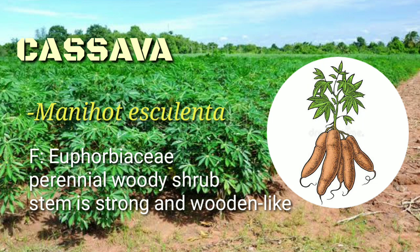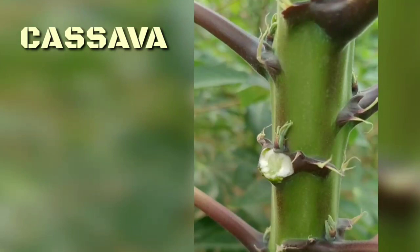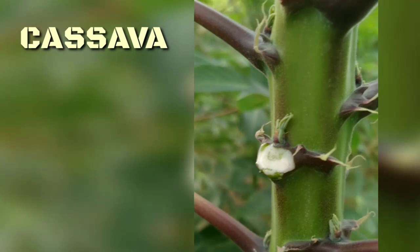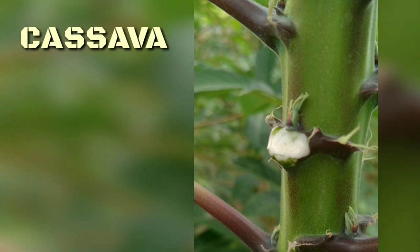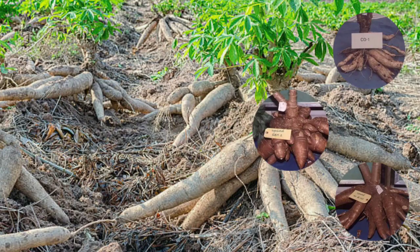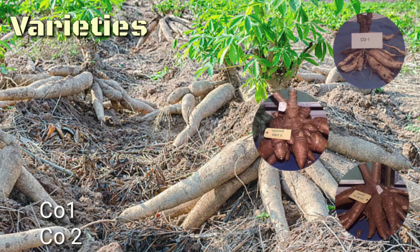Tapioca has the scientific name Manihot esculenta and it belongs to the family Euphorbiaceae. The plant is woody with an erect stem and spirally arranged leaves. The plant produces petal-less flowers. The cassava plant is common in the tropics and is adapted to hot conditions of tropical lands.